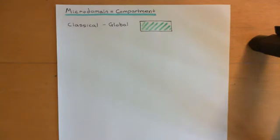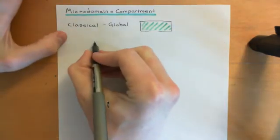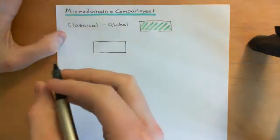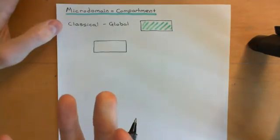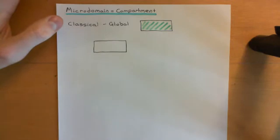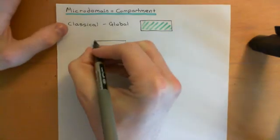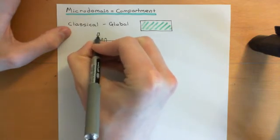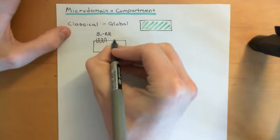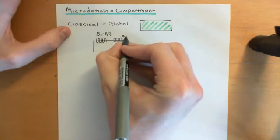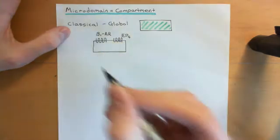The problem with that view comes quite simply from cardiomyocytes. If we let our cell be a cardiomyocyte, cardiomyocytes have two different types of receptors on their surface which both couple to GS heterotrimeric G-proteins. I'm just going to give you two as an example: one of these receptors is the beta-1 adrenergic receptor, and the other is the EP4 receptor.